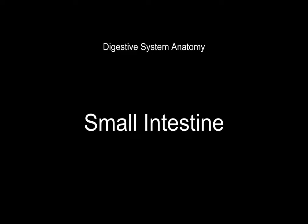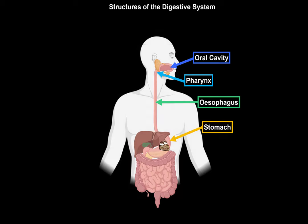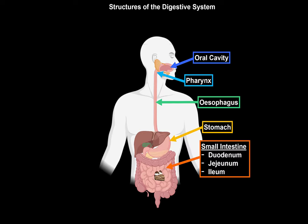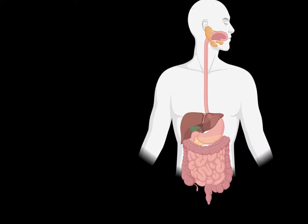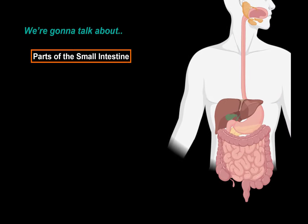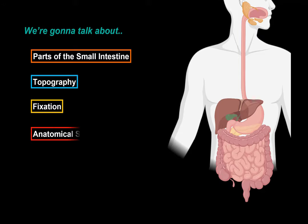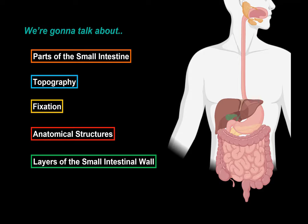In this video, we're going to go through the anatomy of the small intestine. In the last video, we went through the anatomy of the stomach. The next step after the stomach is the small intestine. We're first going to look at the components that make up the small intestine, then the topography and how it's fixated to the posterior abdominal wall. After that, we'll look at important anatomical structures related to the three parts, and then the layers of the small intestinal wall.